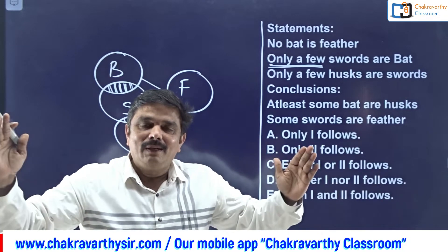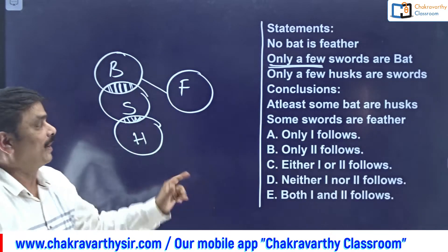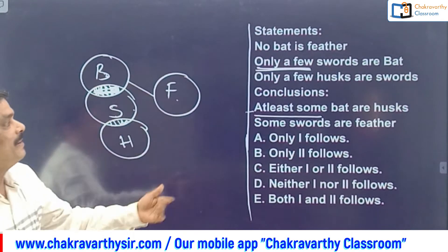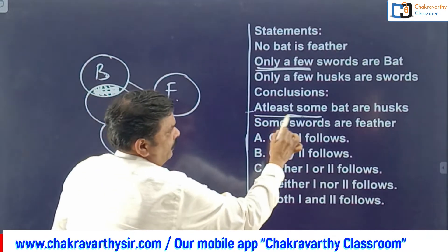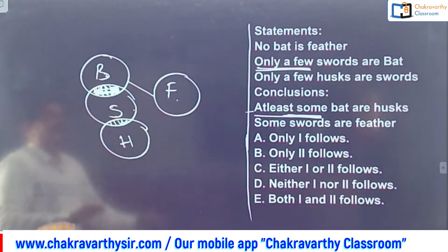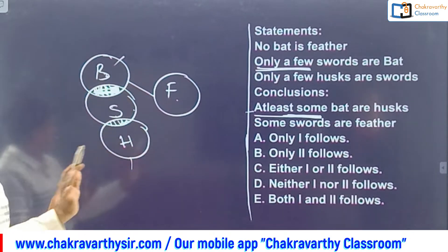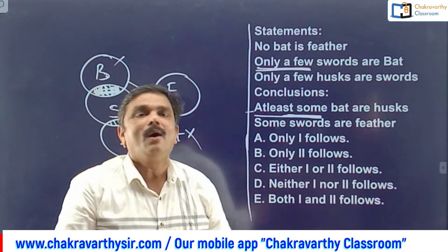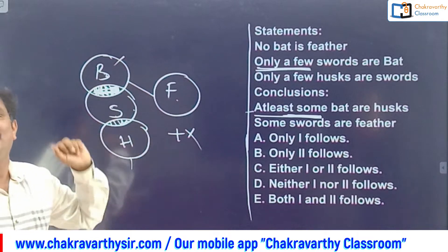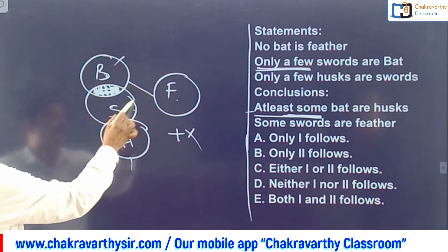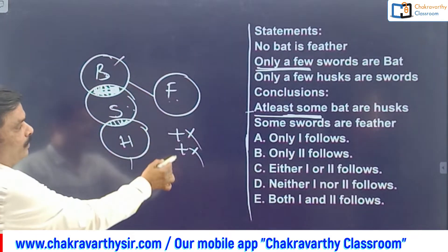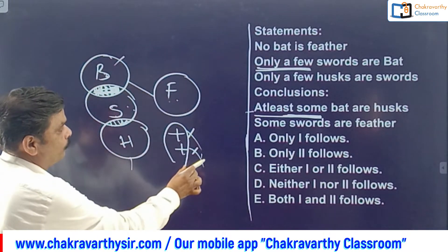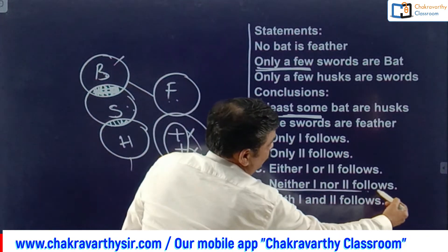Take the first conclusion: at least some bats are husks. 'At least' is nothing but 'some'. Some bats are husks - in the basic diagram, bat and husk have no relation, so this positive conclusion is wrong. The second conclusion: some swords are feathered. Swords and feathered have no relation - positive, wrong. When both conclusions are positive and both are wrong in the basic diagram, no need to go for the alternate diagram. Answer: both are wrong, meaning neither one nor two follows.